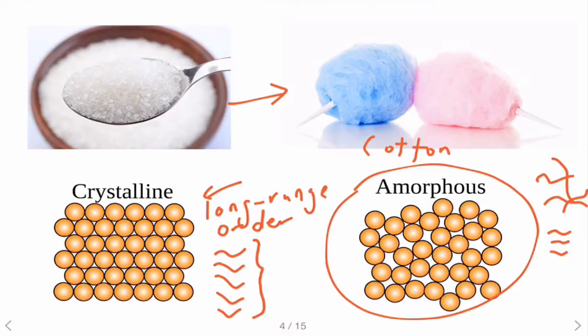Sometimes in amorphous material, the density at one point is different from the density at another point, making it not very uniform compared to crystalline material.